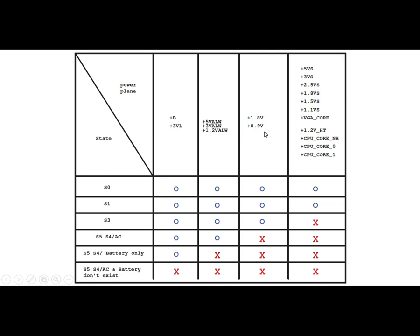This is basically the power for the RAM, random access memory. For the RAM, as you know, there are many types of random access memory: DDR1, DDR2, DDR3, DDR4, DDR5, etc. So this power here — 1.8 volt and 0.9 volt — is for DDR2.